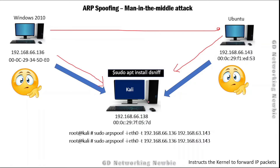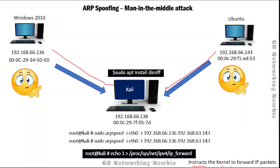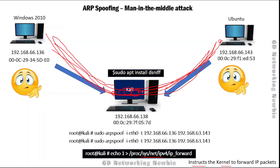By default, Kali Linux can only send and receive packets — it cannot forward them. To allow communication to continue as before, we need to enable IP packet forwarding on Kali. There is a magic command that instructs the Linux kernel to forward IP packets by writing to a file in the /proc filesystem, enabling the ip_forward feature. Once this is done, Kali will receive frames, process them, and forward them, so communication resumes while we sit in the middle.